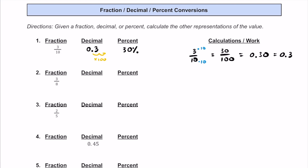For number two, we have this fraction of 3 eighths. You may have this memorized, and if you don't, that is okay. What we're going to do is long division. So it's 3 divided by 8. It goes in 0 times. We can add a 0 here. 8 goes into 30, 3 times.